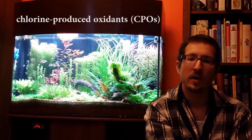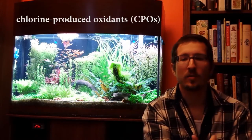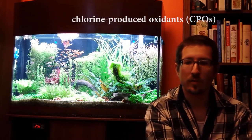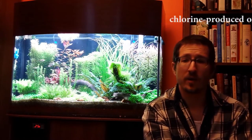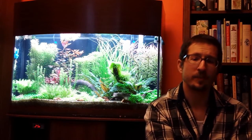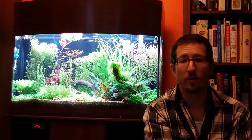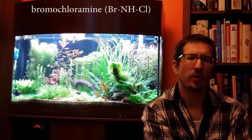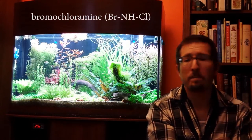For chlorine, these are usually referred to as chlorine-produced oxidants, or CPOs. For example, monochloramine is known to react with bromide in seawater just within a couple of hours and forms bromochloramine.